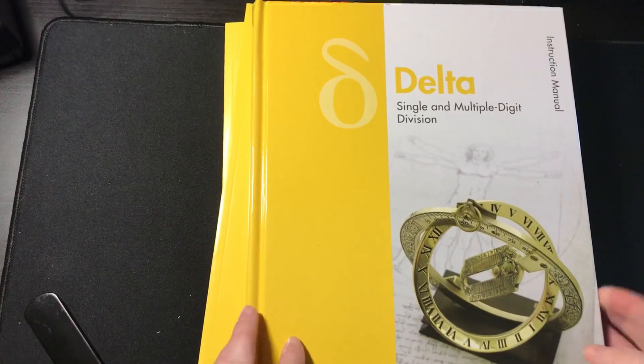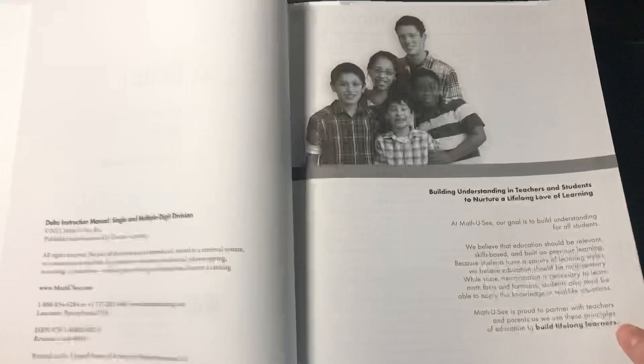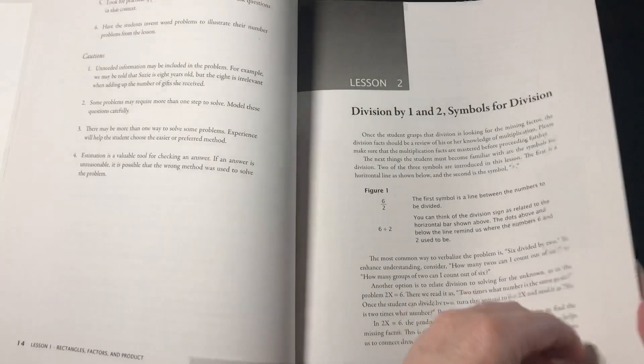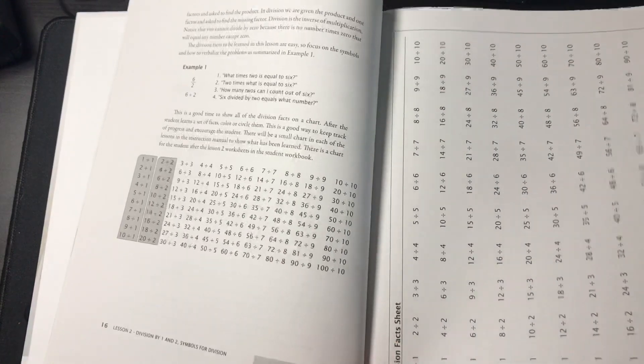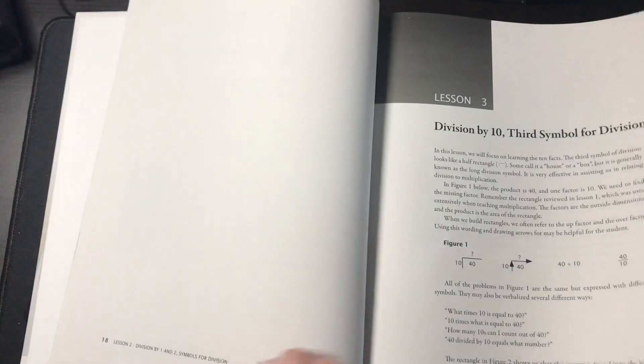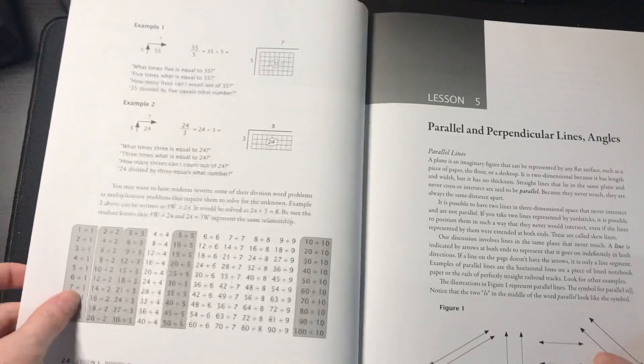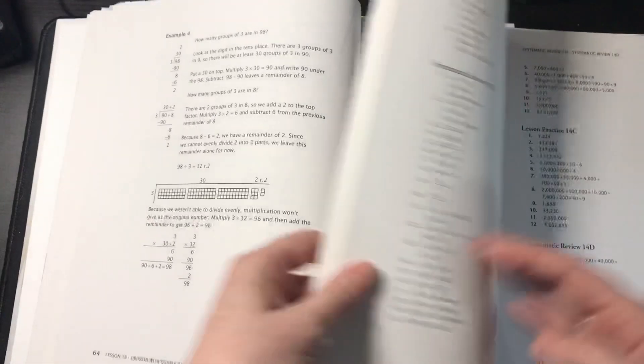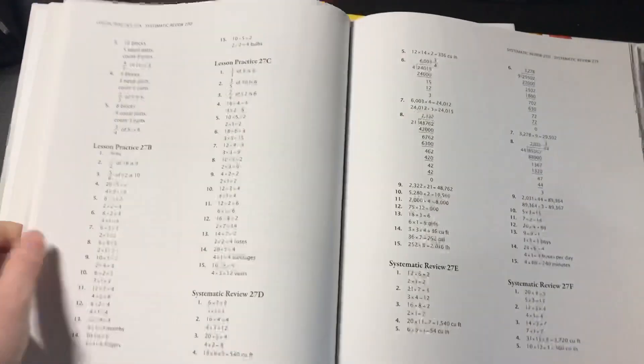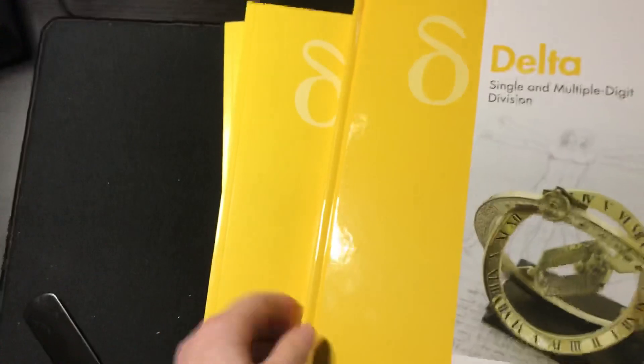It comes with the instruction manual. The digital pack online also comes with the digital instructor's manual, but this gives the lessons and tells you how to teach the kids. So if you did not want to use the DVD, you could teach the lesson using these lessons in the teacher guide. This goes through every single lesson and then in the back, it has all of the answer keys. With the digital pack, that is all included online for your convenience.